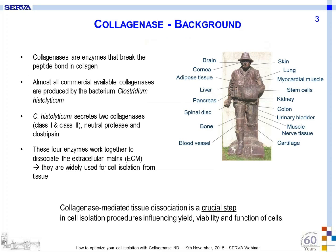Why is collagenase used to isolate cells? Collagen is the most common protein in mammals and an important part of the extracellular matrix. The peptide bonds in collagen can be broken by collagenases. Almost all collagenase for tissue dissociation originates from the bacterium Clostridium histolyticum. Clostridium histolyticum is a pathogen which secretes two classes of collagenases as well as the enzymes Neutroprotease and Clostriperine as a virulence factor, to digest the extracellular matrix and to spread in the host's body. Therefore, the natural mixture of these four enzymes is, so to say, optimized by nature to dissociate tissue.